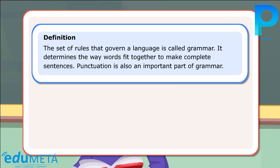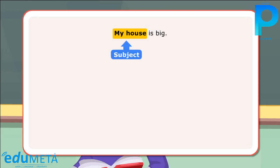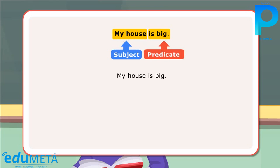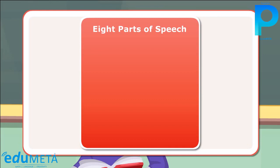Punctuation is also an important part of grammar. Let us look at some rules of grammar. A sentence is a group of words that make complete sense. Example: My house is big. A sentence has a subject and a predicate. Example: 'My house' is the subject and 'is big' is the predicate. A singular subject needs a singular predicate. Example: 'My house' is singular, so the verb 'is' is used in the predicate 'is big'. There are eight parts of speech that appear in a particular structure in a sentence.